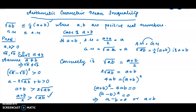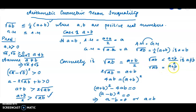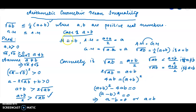Therefore, root of AB is less than (A+B)/2 if A is not equal to B, and root of AB equals (A+B)/2 if and only if A equals B. This completes the proof of the Arithmetic Geometric Mean Inequality. In summary, GM ≤ AM.